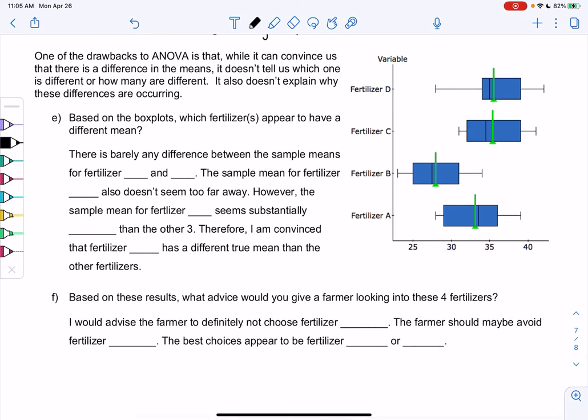So let's now make some meaningful conclusions. Because if we do statistics and we can't make conclusions, then what's the point? So one of the drawbacks to ANOVA is that while it can convince us that there is a difference, it does not tell us which one is different or how many. So are they all different? Is one difference? It also doesn't explain why. Statistics doesn't tell us why. So I made the box plots so I could help us compare. So we have fertilizer D, C, B, and A. I put them all in the same graph because it makes it really easy to compare. And then the green is the average. So I added the average to the box plot. So I'm just labeling the averages. Then we can kind of get an idea of which average is different. So I think the box plot plus the average helps us really visualize which one's different.